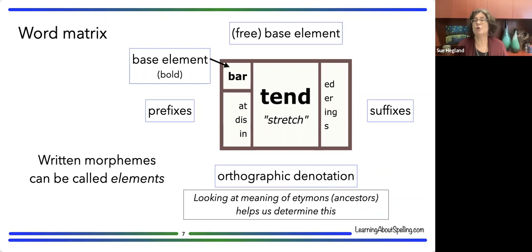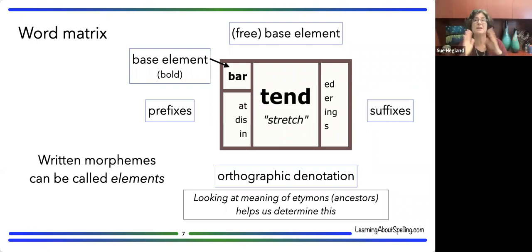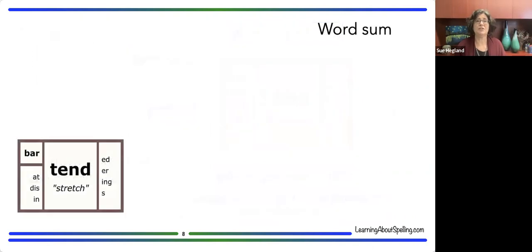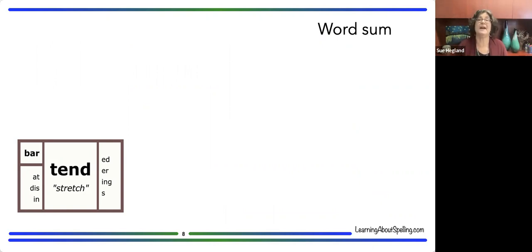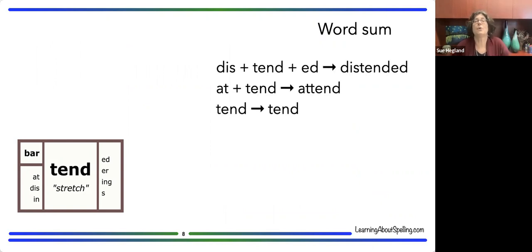I'd encourage you to think about the difference between an orthographic denotation and a meaning, and even get away from saying that morphemes 'have meaning,' because as we'll see, that can really limit our ability to understand and use morphology. As we look at a matrix, we're looking at a static representation of morphology. There's also a way to show the process of building written words from written elements, and that's called a word sum.